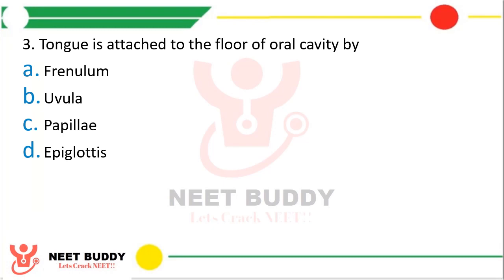Question 3. Tongue is attached to the floor of oral cavity by: option a. Frenulum, option b. Uvula, option c. Papillae, or option d. Epiglottis. The correct answer is option a, Frenulum.